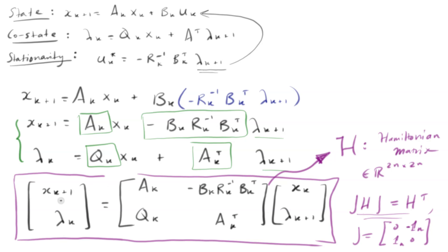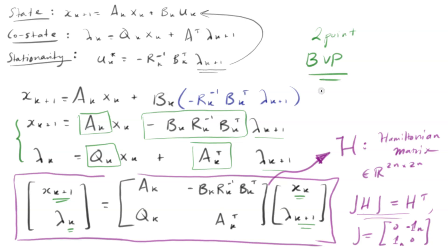One more thing to point out: the state progresses forward in time — x_{k+1} equals something times x_k — but the co-state equation progresses backwards in time, because we have lambda_k in terms of lambda_{k+1}. It turns out that this set of difference equations is actually a two-point boundary value problem. In general, these types of problems are very difficult to solve analytically, and you usually need to solve them on the computer with simulations. But we're going to solve this LQR problem analytically under some very important assumptions — and we'll do that in the next video.